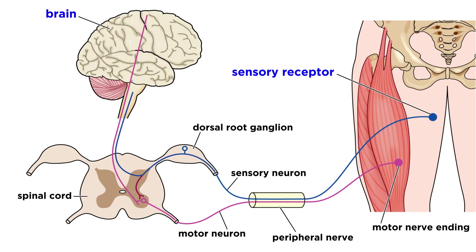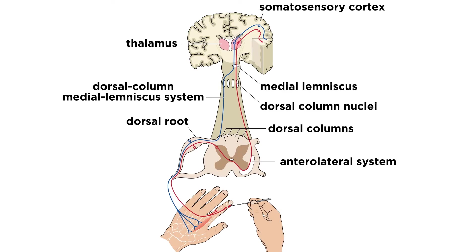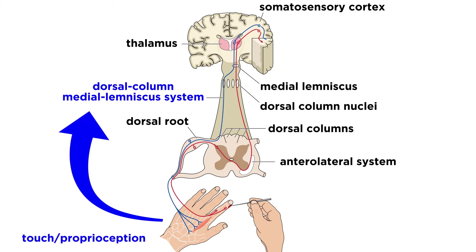So how does information get from these receptors to the brain? Nerves relay this information to the spinal cord via dorsal roots, and each section of the body that is innervated by the dorsal roots of a particular segment of the spinal cord is called a dermatome. We can see all the dermatomes of the human body here and the specific vertebrae they correspond to, although there is considerable overlap. From here, information will head up one of several pathways to the brain. The two major ones are the dorsal column medial lemniscus system, which typically carries information about touch and proprioception, and the anterolateral system, which typically deals with pain and temperature.